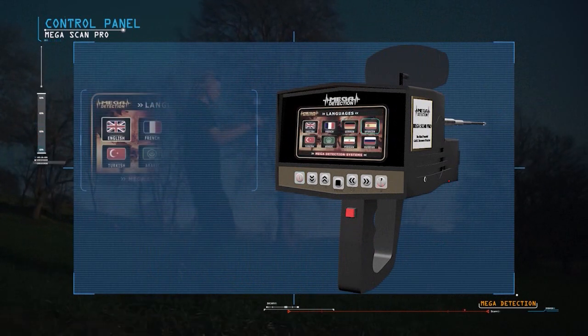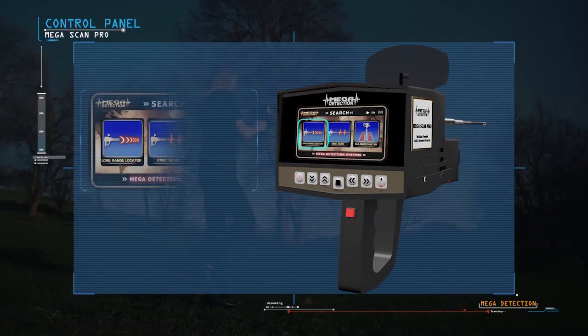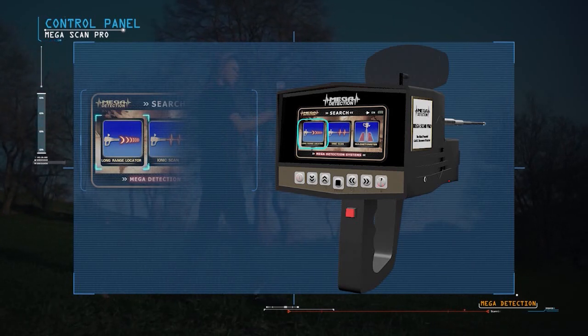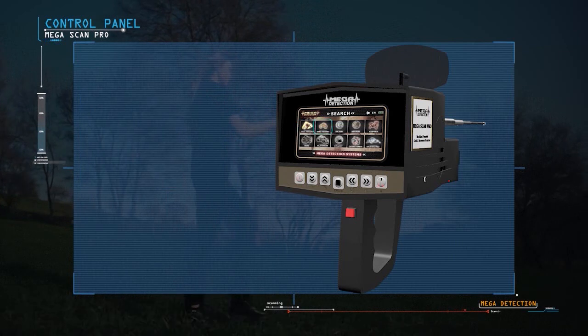After selecting the language from the languages menu, we select Long Range Locator System. After selecting Long Range Locator System, the targets menu in the device will appear.